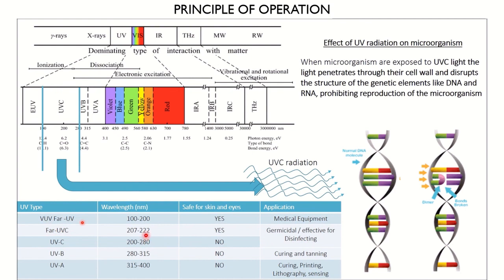Any wavelength of electromagnetic spectrum which is less than 280 nanometers causes a germicidal effect. Any wavelength less than 220 nanometers also causes a germicidal effect but does not harm human beings. Between 200 and 280 nanometers it causes germicidal effect. When this UVC radiation falls on the DNA of microorganisms exposed to UVC light, it penetrates through their cell wall and disrupts the structure of genetic elements like DNA and RNA, basically prohibiting reproduction. Once UV radiation falls on the DNA of these microorganisms, they cannot reproduce and eventually die.